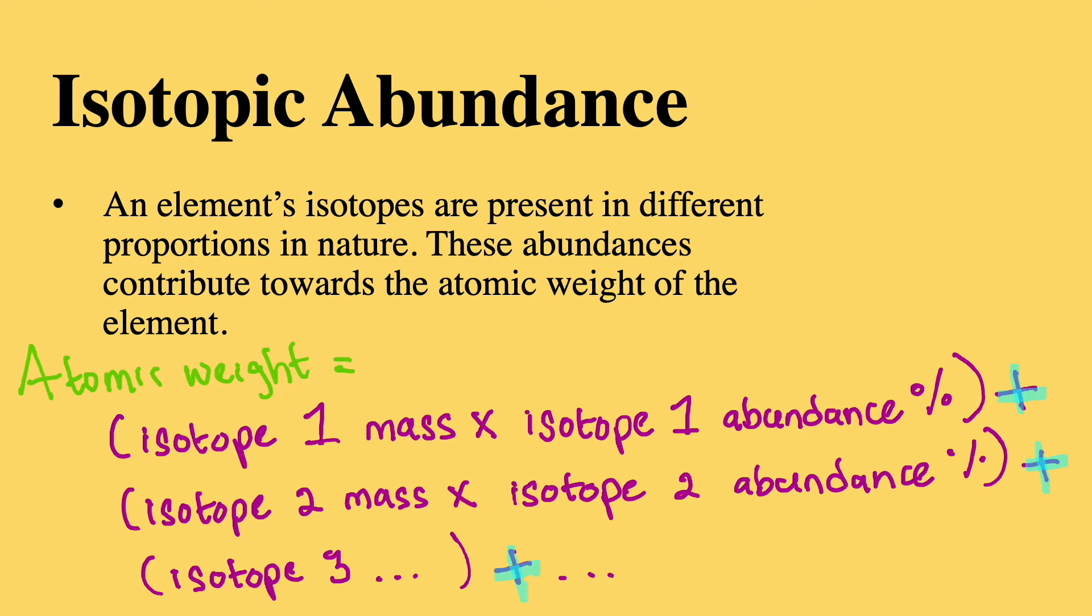Now, when it comes to atomic weight, the isotopic abundances for a given element needs to be taken into consideration. Let's consider carbon, for example.